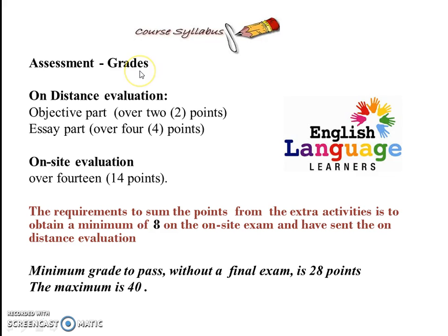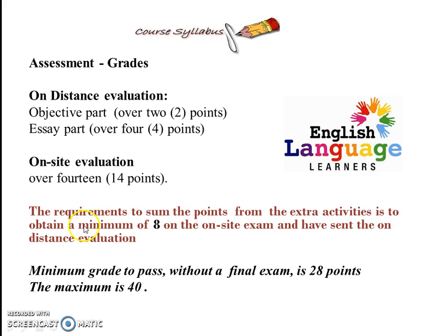This is the information about your distance evaluation. Distance evaluations have two parts: an objective part worth two points and an inside part worth four points — six points altogether. Combined with the 14 points from the on-site evaluation, that makes 20 points each semester, which means 40 points across both semesters to pass. The requirement to sum points from extra activities is to obtain a minimum of eight on-site exam points and have submitted the distance evaluation. The minimum grade to pass without a final exam is 28 points.